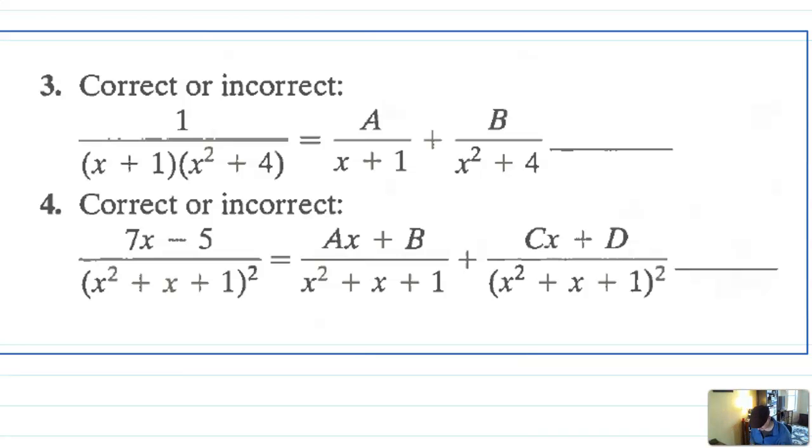Welcome back. So let's take a look at these. So this first one is set up incorrectly. And the reason why is that this x squared plus four is a quadratic factor, which means when we write its numerator, we can't just write plain old b, we have to write bx plus c. Now it's not a repeated quadratic factor. There's only one copy of it, there's no exponent on the outside. So I don't need to do anything like that.